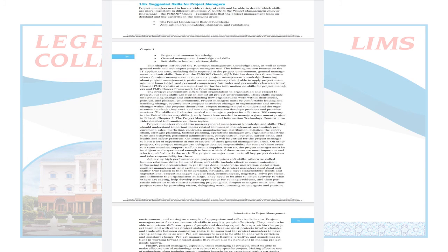Suggested skills for the project manager — very easy. Which skills are needed? In bullet points: project manager body of knowledge should be there; application area knowledge, standards and regulations should be known; project environment knowledge; general management knowledge and skills — how to administer, how to stop wrong things; soft or human skills — you should know the methods of controlling people, how to talk to people — all these things should be known.